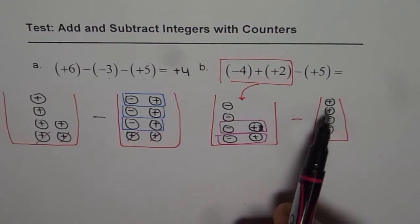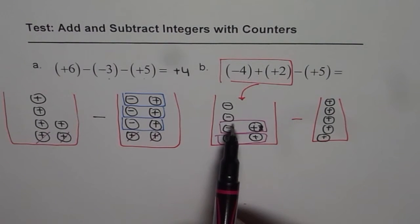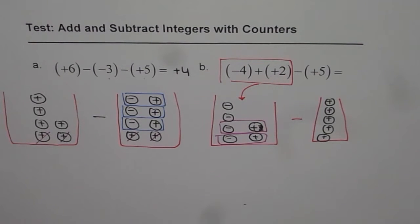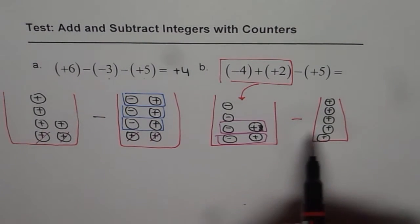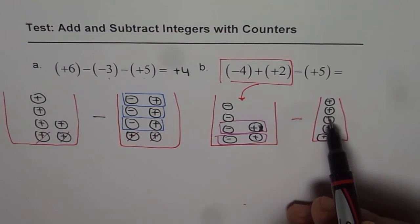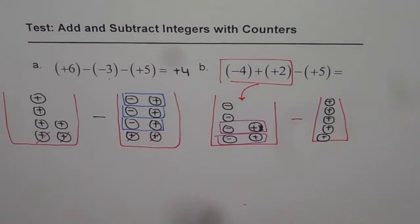And then we have to take away (+5) from (-2). Now we cannot really take away (+5) from (-2). So what we should do? Now we can add 0s. We need to add 5 zeros, correct? So let us add 5 zeros here.